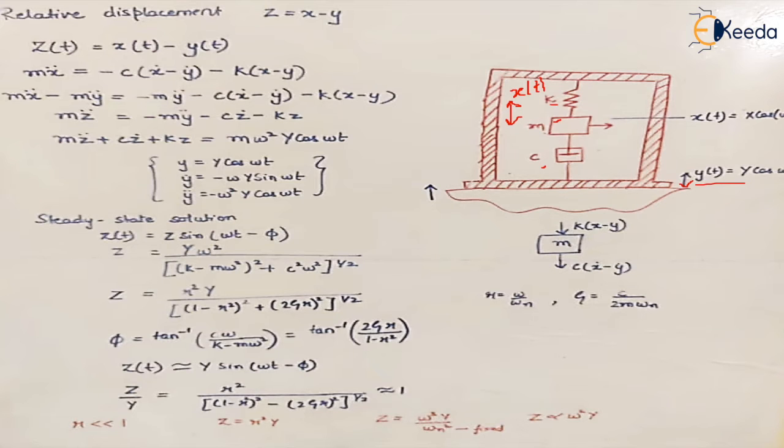Therefore the relative displacement of the body is denoted by z = x - y. So this is the equation that we have already deduced and we say that the motion of the vibration of the base is basically a harmonic motion. We calculated the steady state solution of this equation where r is omega upon omega_n, where omega_n is the natural frequency of vibration and zeta is the damping factor.